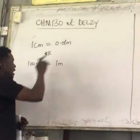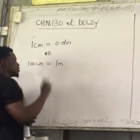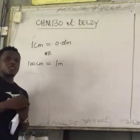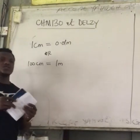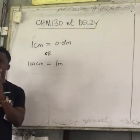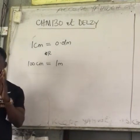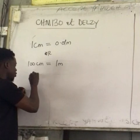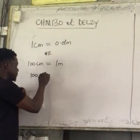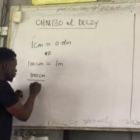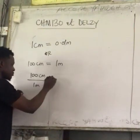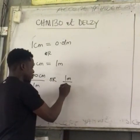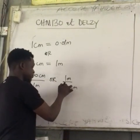If you present this in a conversion factor, every relationship can be expressed in two forms. The first form can be written as 100 cm over 1 meter, or 1 meter over 100 cm.